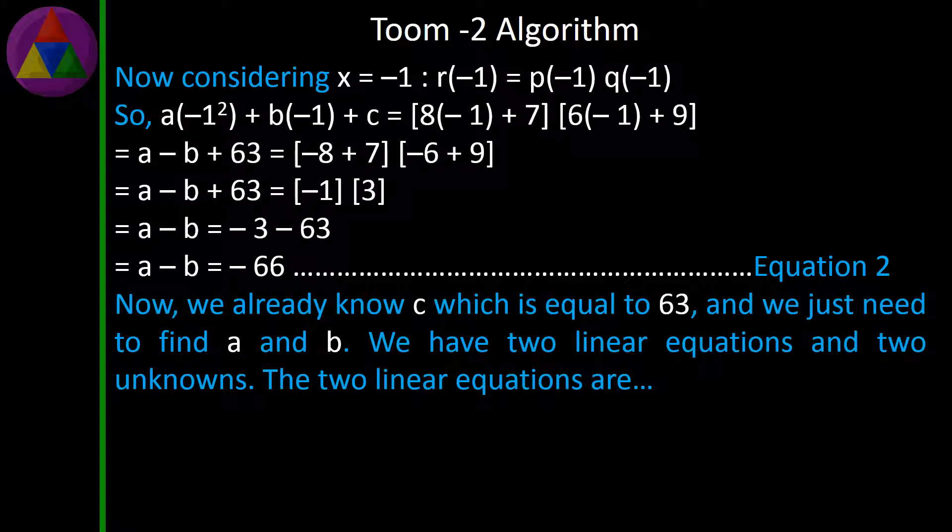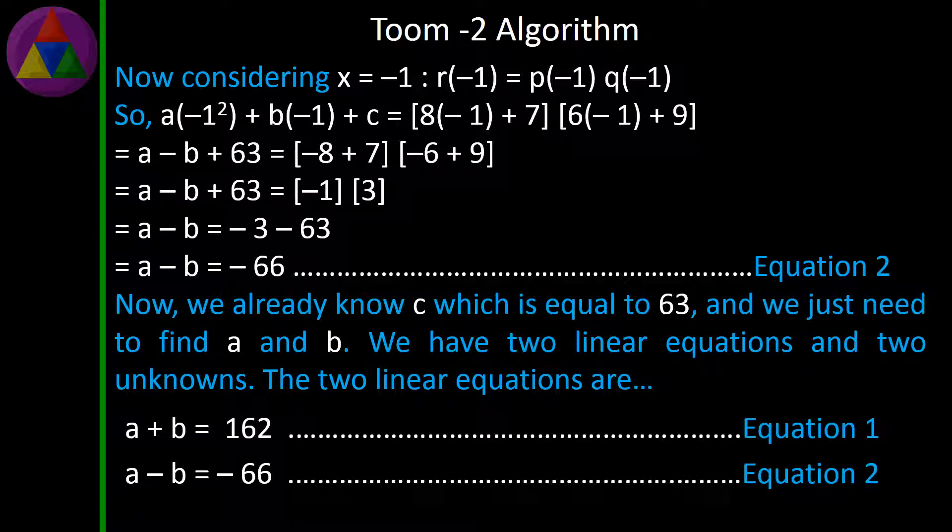Now, we already know c which is equal to 63, and we just need to find a and b. We have two linear equations and two unknowns. The two linear equations are: a + b = 162 (Equation 1), and a - b = -66 (Equation 2).